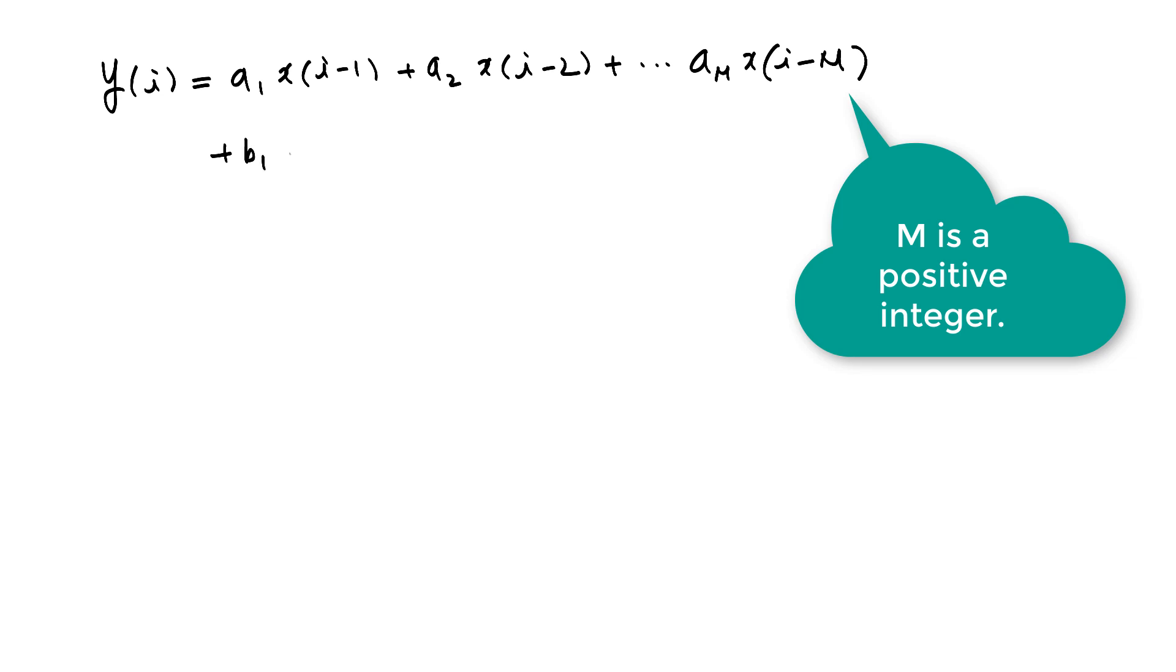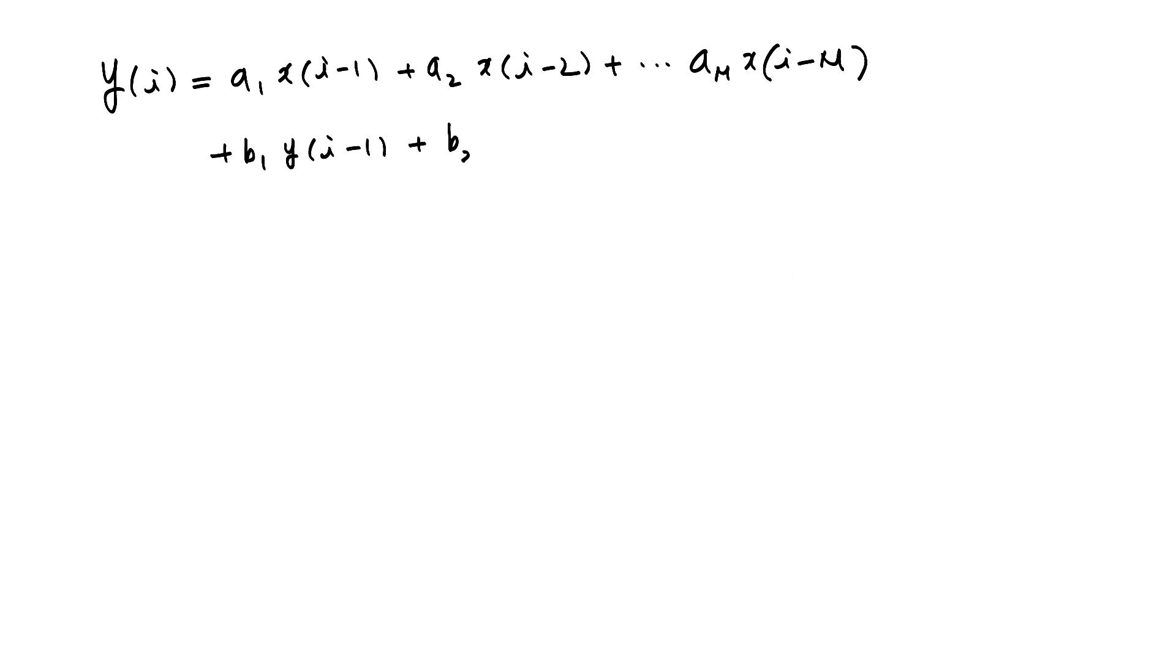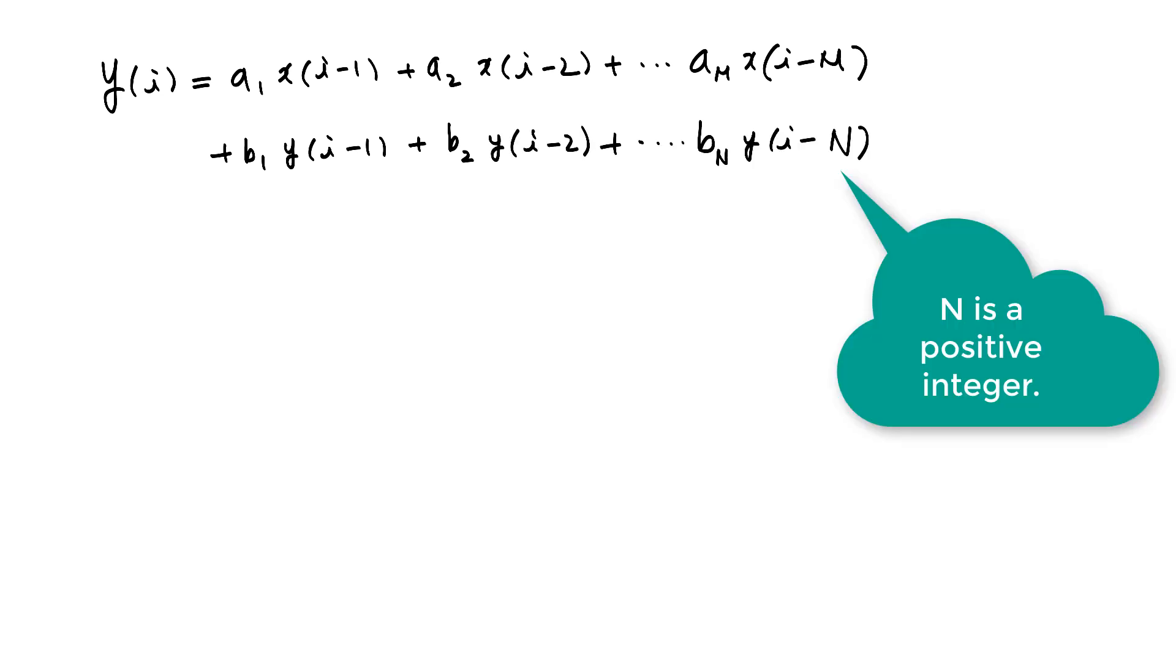Considering time delay, we can have a general equation for simple 2G regulatory network. So Y of I is equal to A sub 1 X(I minus 1) plus A sub 2 X(I minus 2) plus A sub M X(I minus M) plus B sub 1 Y(I minus 1) plus B sub 2 Y(I minus 2).